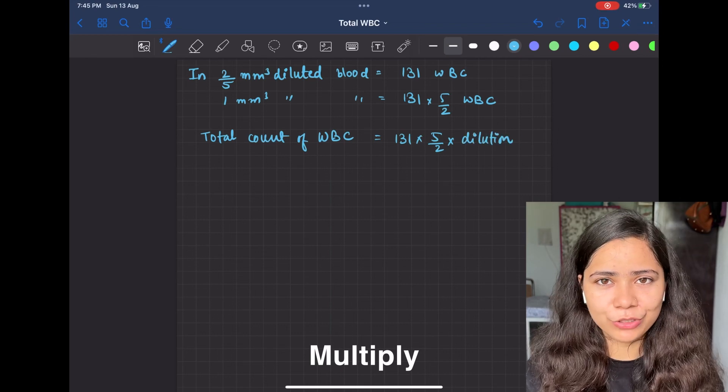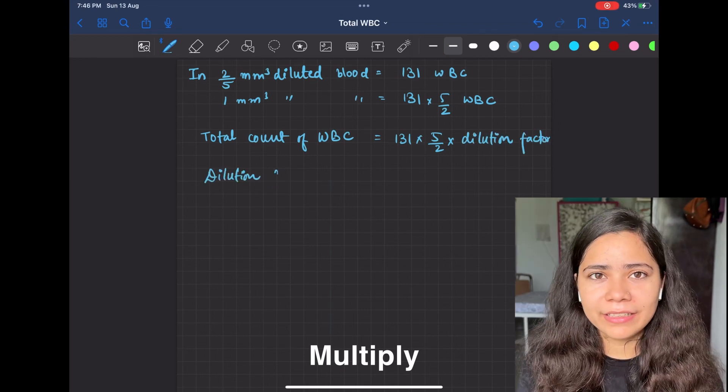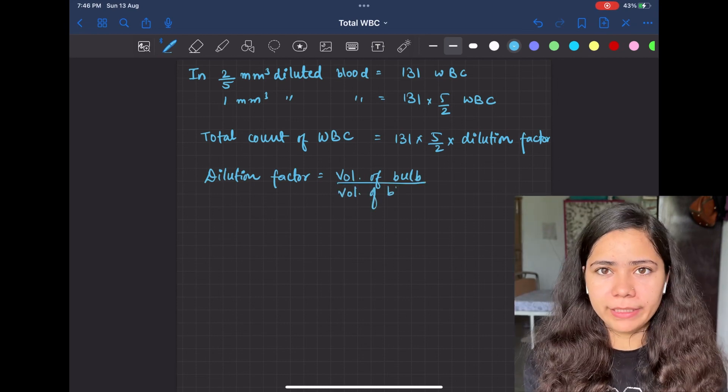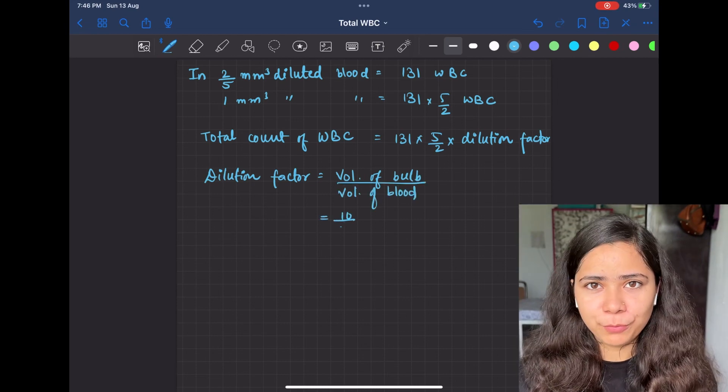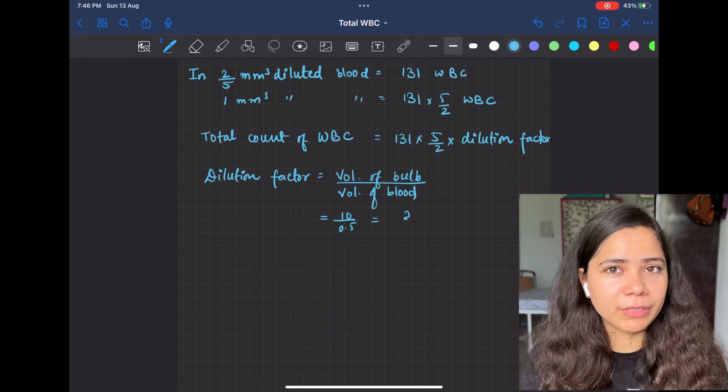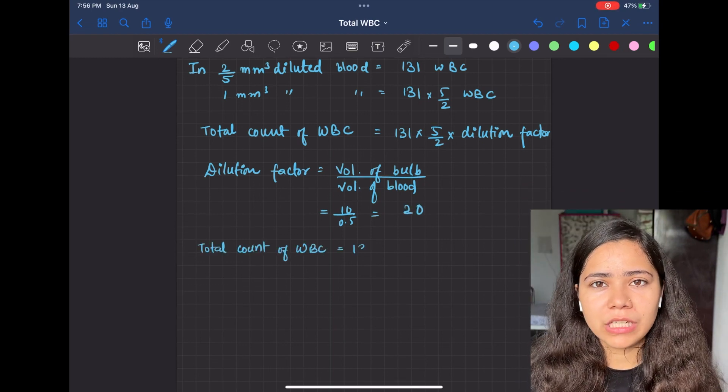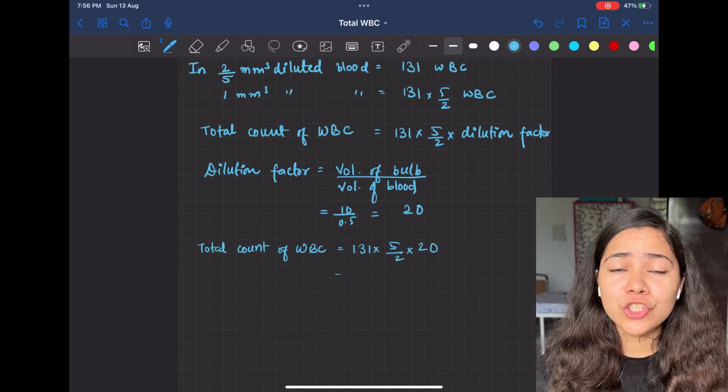We will account for the dilution factor. Dilution factor equals total volume of bulk divided by volume of blood taken, which is 10/0.5, so the dilution factor is 20. So total WBC present in our blood is 131 × 5/2 × 20 = 6,550 WBC per mm³.